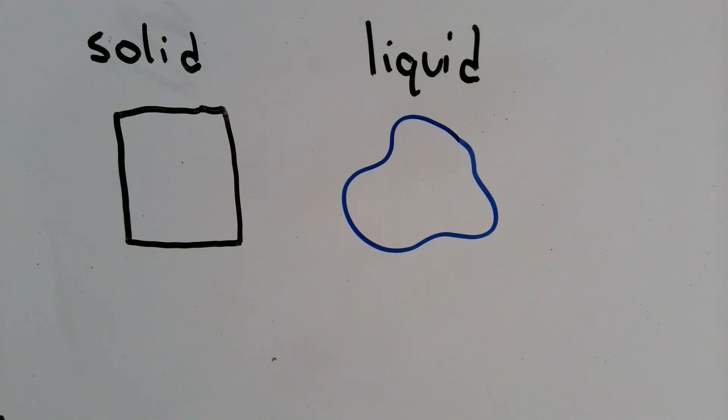If fluids don't have a fixed shape, then what determines their shape? In school, we learned that a solid has a fixed shape. A liquid takes the shape of its container, keeping the same volume, and a gas expands to fill the volume of its container. Let's focus on liquids, since they are easier to analyze.